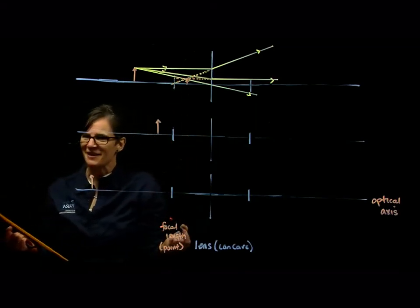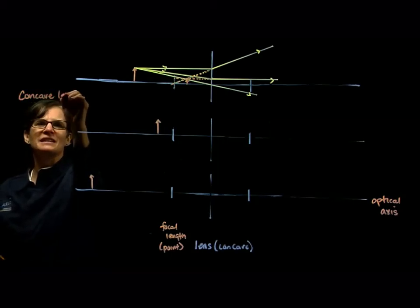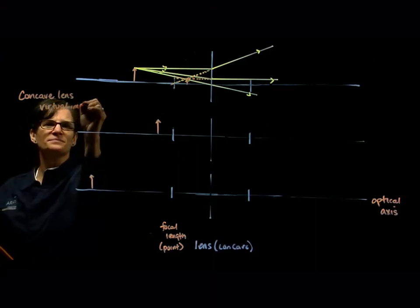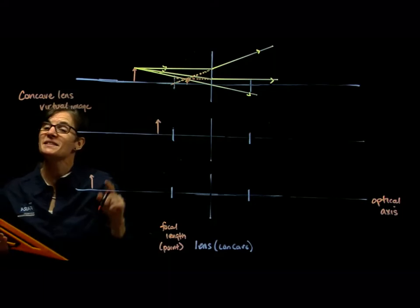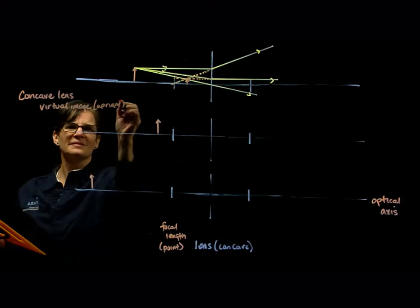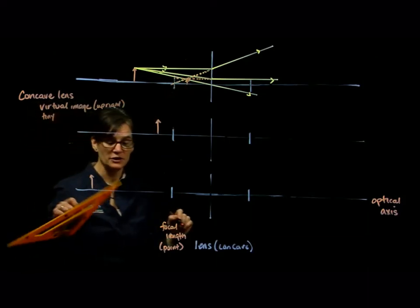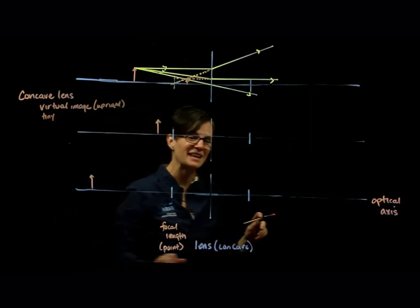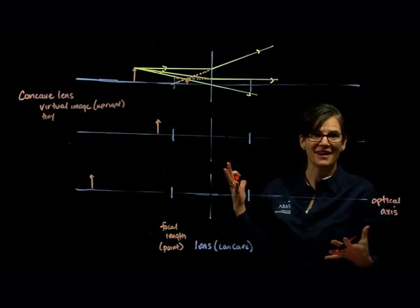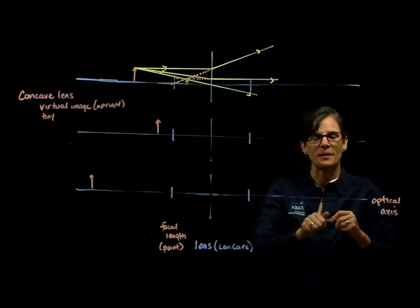A concave lens gives me a virtual image, which means it's upright. And in this case we see that it's tiny. Not all virtual images are tiny — remember our concave lens could produce a magnified virtual image when the object was inside the focal point. But this one is tiny. So that's one property of the concave lens.